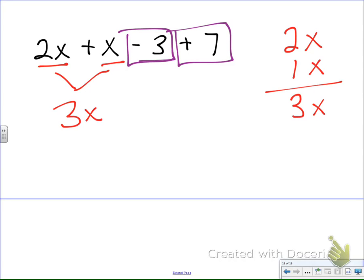And I have a positive 7. Okay, so I'm going to set this up on the side as well. And I'm going to say alright, I had negative 3 and positive 7.